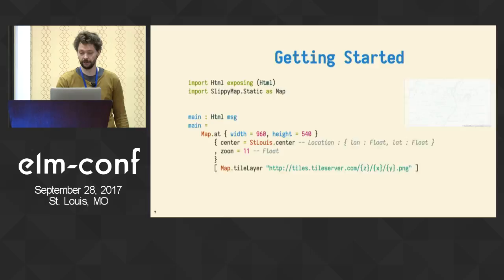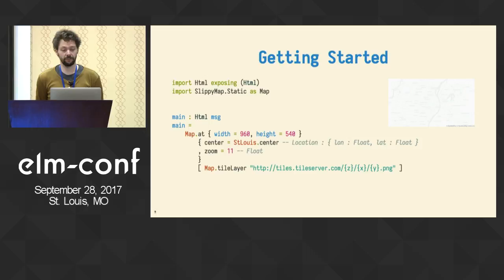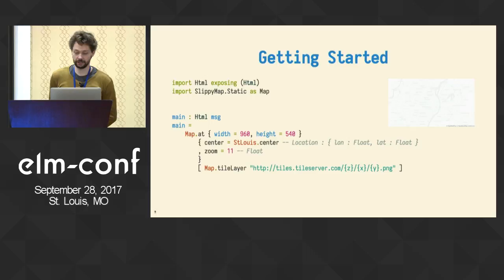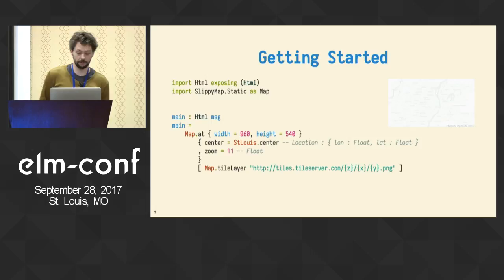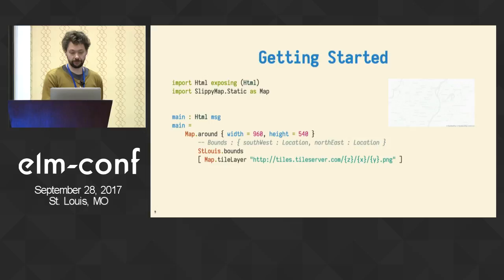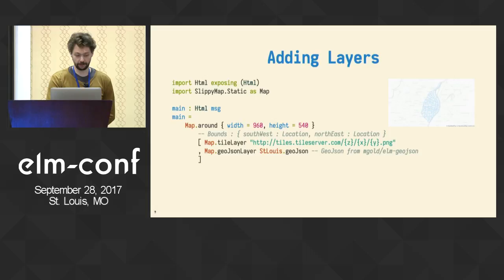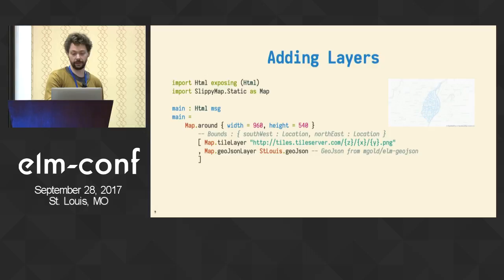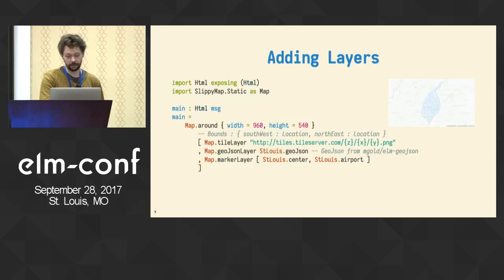So how do you get started? I made two special modules to get started quickly. You just import the static slippy map module and you have everything you need to create a map. You just create a map with a given size at a given location and zoom level, and you add a tile base layer. You can also create a map around a given bounds. But just the base layer is boring, so you usually want to create data layers — like a GeoJSON layer. The GeoJSON is from the mGeoJSON library; it parses a GeoJSON string into its own type and the slippy map library renders it. You can add markers by giving a list of locations and it renders them on the map.